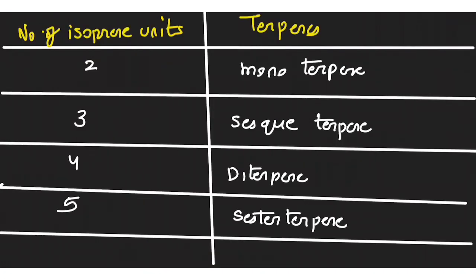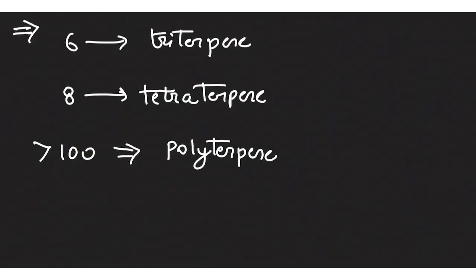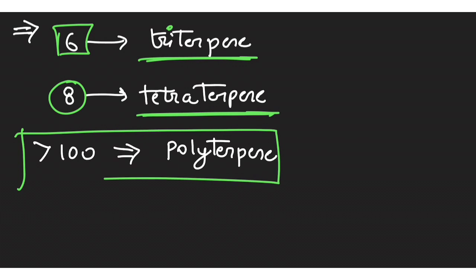Now, there is one table, which is very important. If you have number of isoprene units as two, it is known as monoterpene. If you have three, it is known as sesquiterpene. If you have four, it is known as diterpene. If you have five isoprene units, it is known as sesterterpene. If you have six, it is known as triterpene. If you have eight, it is known as tetraterpene, and if you have greater than 100 it is known as polyterpene.